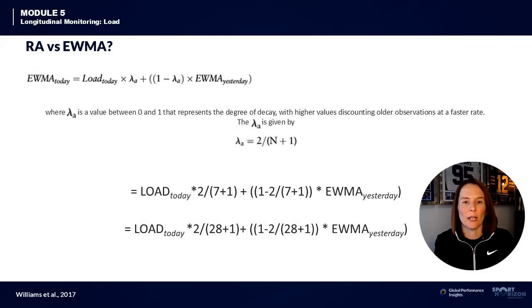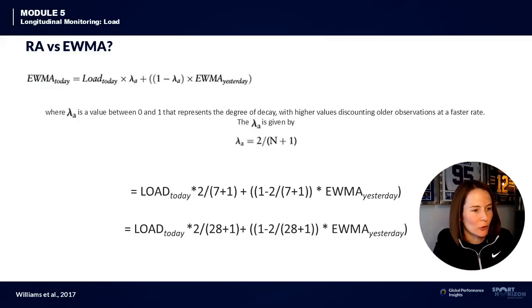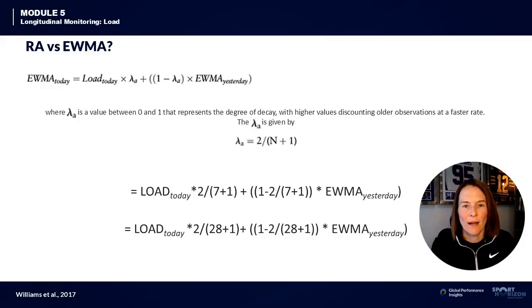A better way to calculate the acute chronic workload ratio is the exponentially weighted moving average, whereby a degree of decay is applied to the training load — assigning a decreasing weighting for each older training load value. For more specifics on how to calculate and set this up with your own training load data, this is covered in more detail in the Fundamentals of Load Monitoring course.